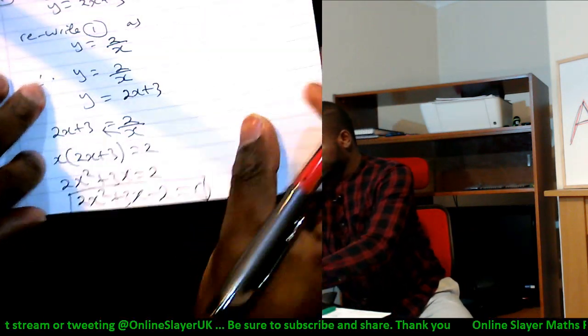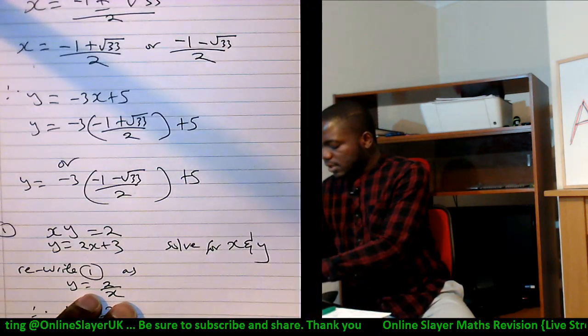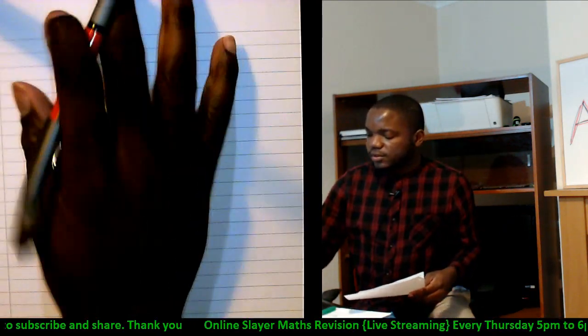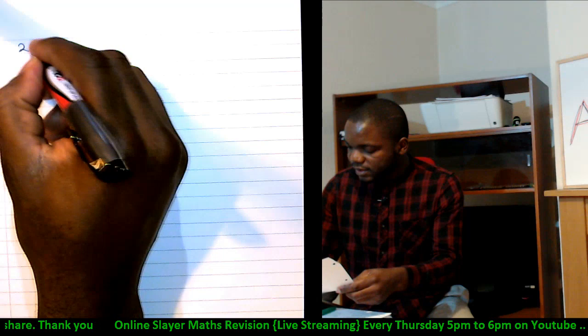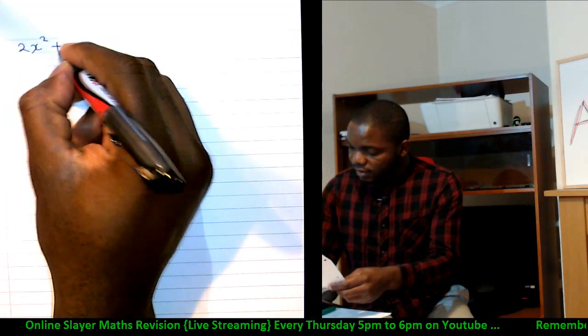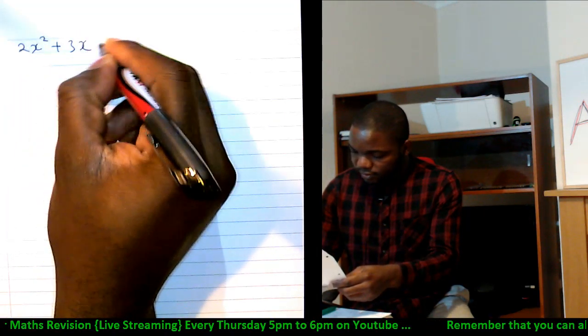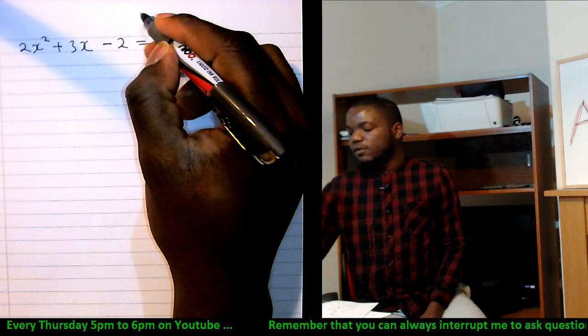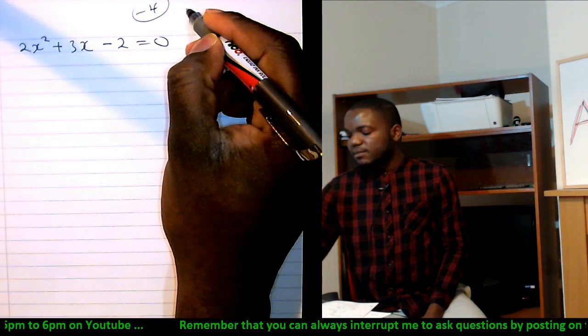Now, you can think of any method to use. You might want to use the factorization method because that looks applicable and straight away. So what do you multiply to get minus 4 and when you add, you get plus 3?